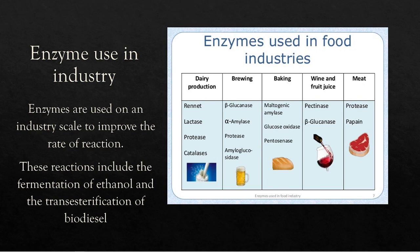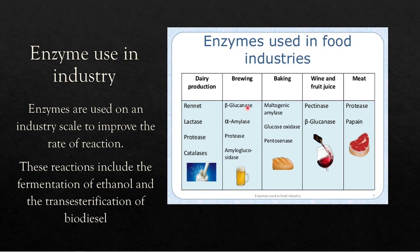Enzymes are biological catalysts that speed up reactions, with a specific enzyme for each specific reaction in the body. They're used on an industrial scale to improve reaction rates. Examples include lactase, catalases, and proteases in dairy production; enzymes used in brewing beers; enzymes in baking to make things rise; enzymes in making wine and fruit juice; and enzymes for breaking down meats.